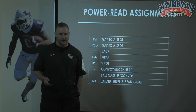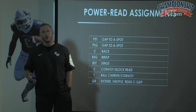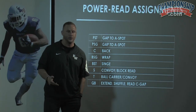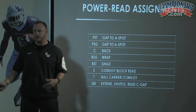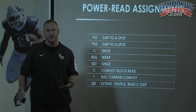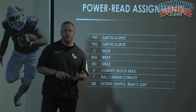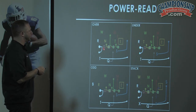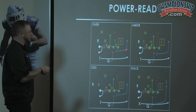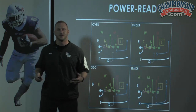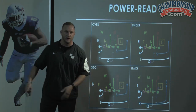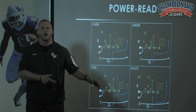When we run our power read series, the quarterback is going to extend, shuffle, and read the C-gap defender. We don't overcomplicate it — we make the read as simple as possible. If you can get the ball out of your hand and we gain yards, do it. If you can give the ball to somebody more athletic and that person is going to gain yards, that's good — more potential for a big play and less potential for you getting hit. The convoy's assignment is an arc release, blocking the first threat to the ball carrier — delivering the ball carrier out to the numbers.